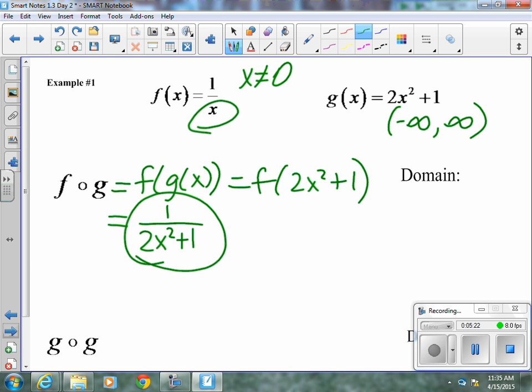So to find the domain of this, we need to find out where 2x squared plus 1 is not allowed to equal 0. 2x squared is not allowed to equal negative 1. x squared can't equal negative 1. Well, if we square root both sides, we get an imaginary number.